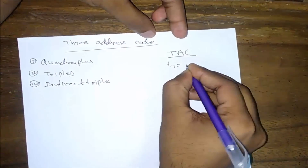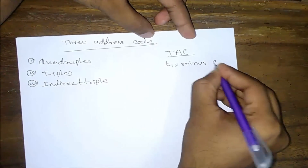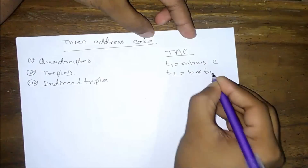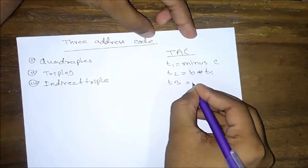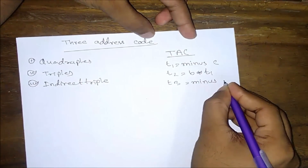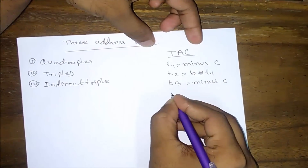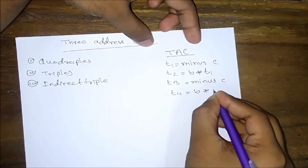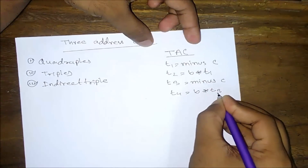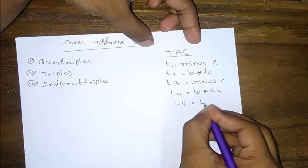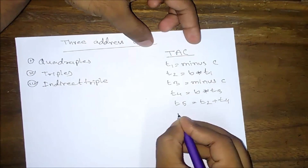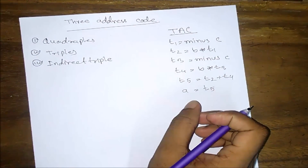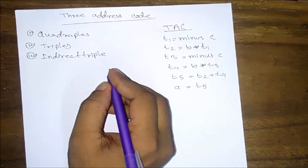So I have the 3-address code: t1 equal to minus c, t2 equal to b multiplication t1, t3 equal to minus c, t4 equal to b multiplied by t3, t5 equal to t2 plus t4, and a equal to t5.